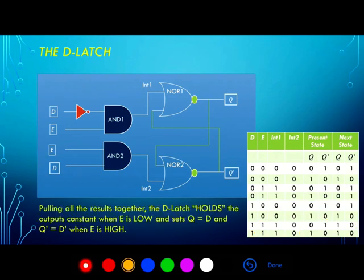Putting it all together, this is the complete truth table for the D latch. It considers all possible combinations of the input, the control signals, and the present state of the outputs Q and Q0.